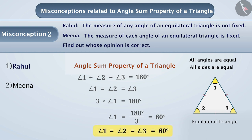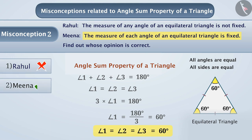Therefore, the angles of an equilateral triangle are always fixed at 60 degrees each. Thus, Meena's opinion is correct. So option 1 is incorrect and option 2 is correct.